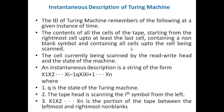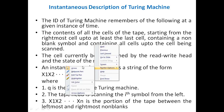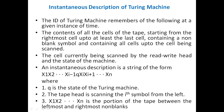When we define any ID of a Turing machine, it generally contains three things at an instance of time — at a particular moment. When a transition is going on, meaning when the machine is moving from one state to another, that particular time is called an instance of time. At that point, the ID contains all the cells of the tape — whatever the tape contains, from the rightmost cell up to at least the last cell containing a non-blank symbol, and all cells up to the cell being scanned.